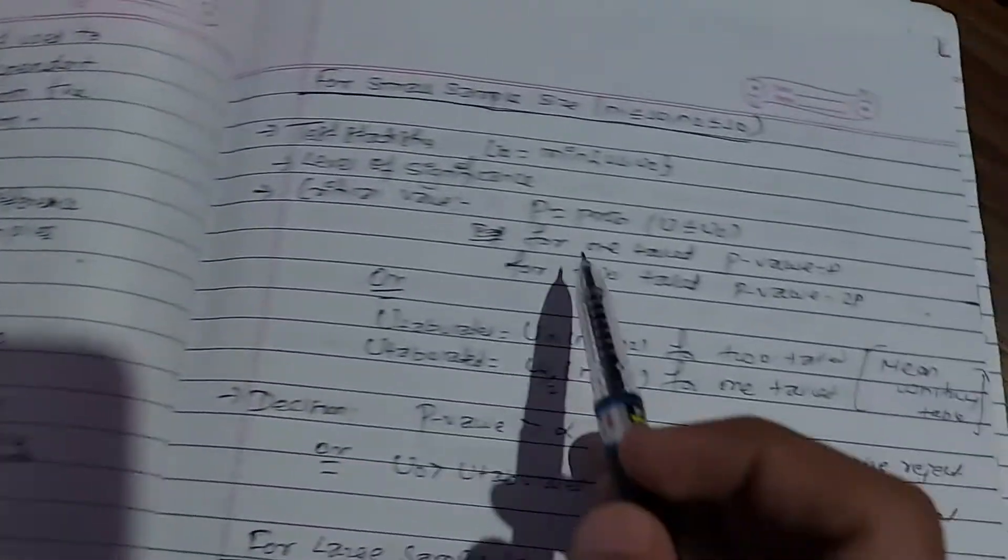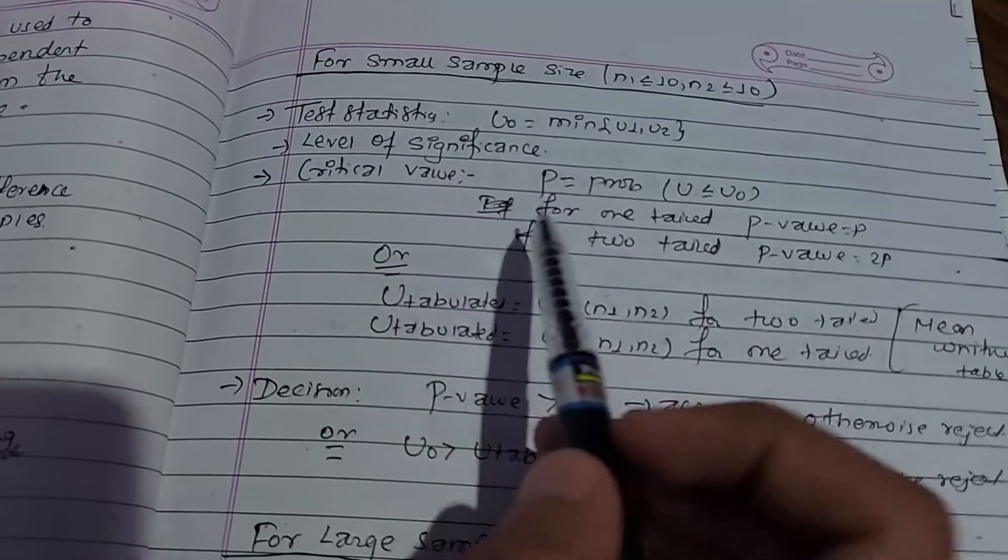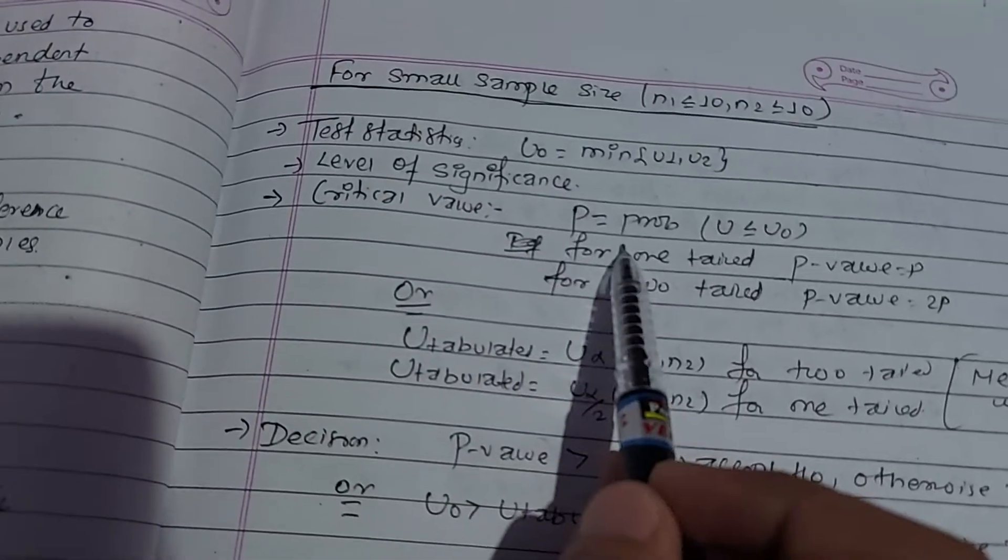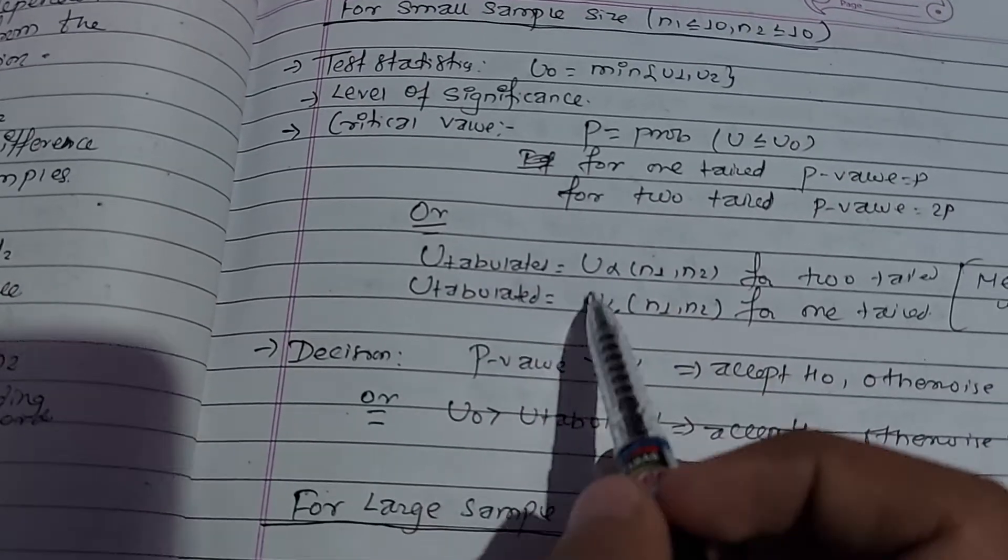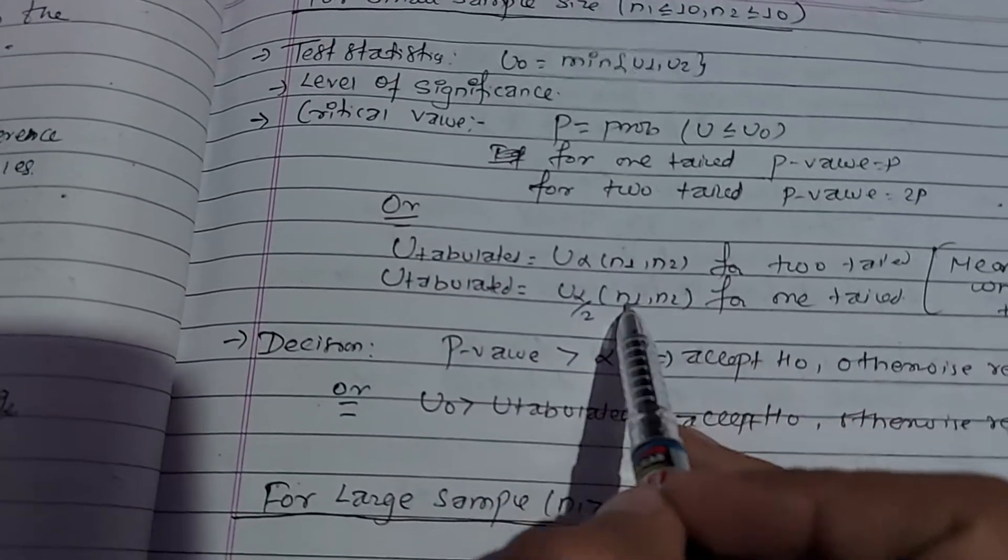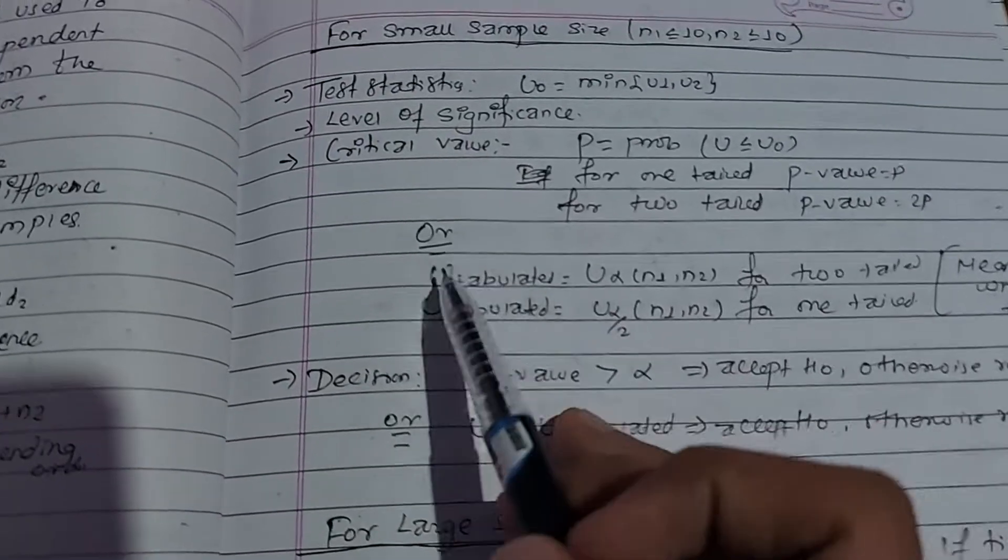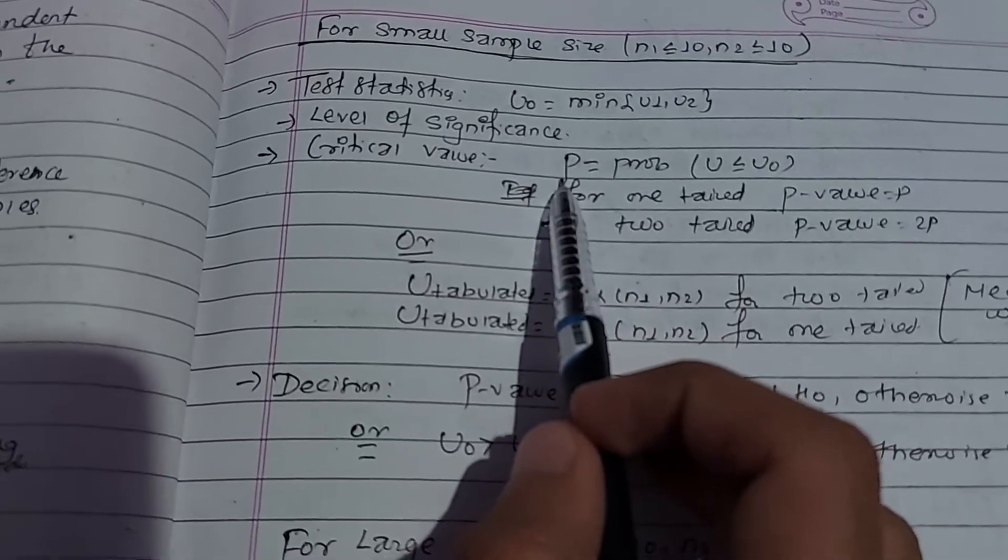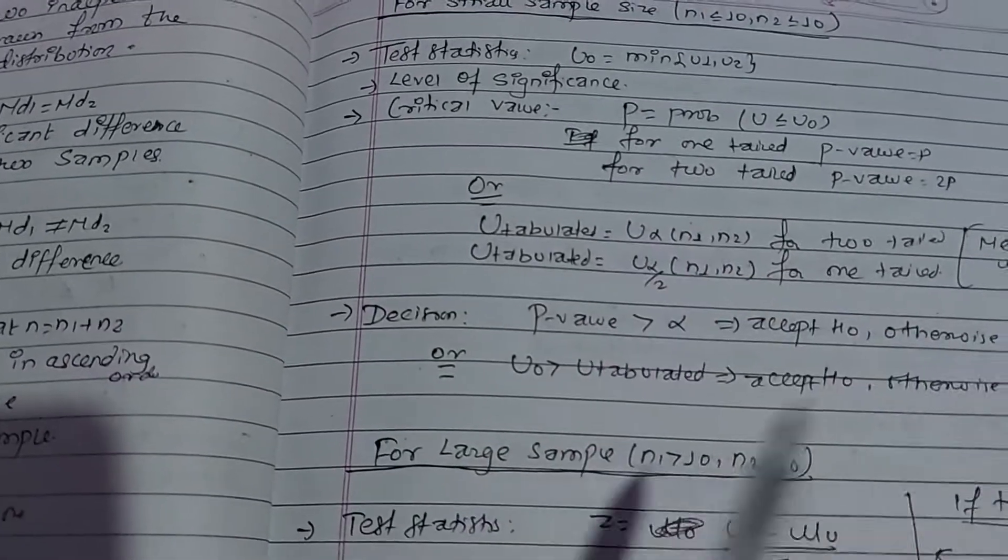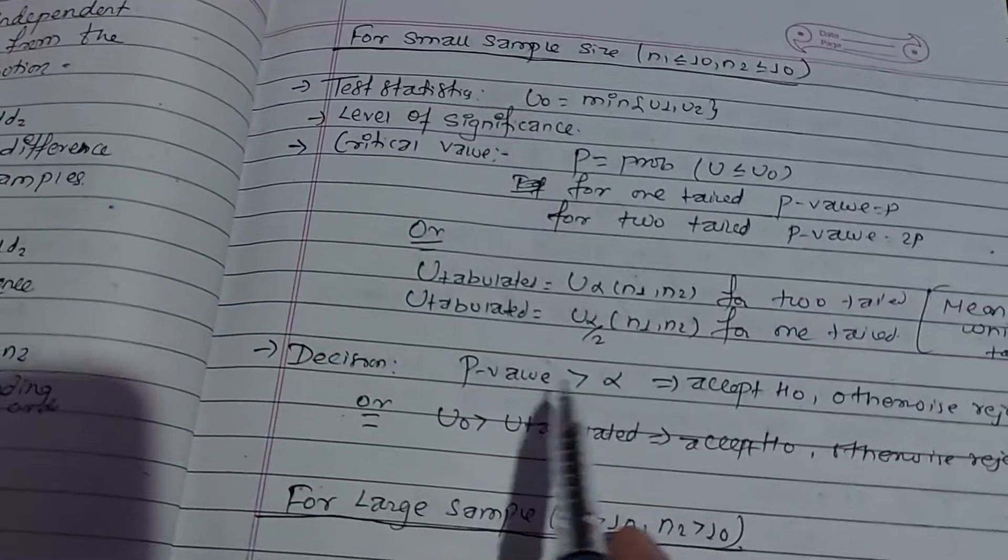For decision making, you can use the p-value test. The p-value method involves comparing your calculated p-value against the level of significance alpha.